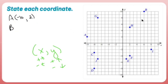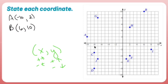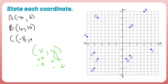C is left 8, down 3 — so C is negative 8, negative 3. And don't forget the parentheses. D is left 8, down 8 — so negative 8, negative 8.